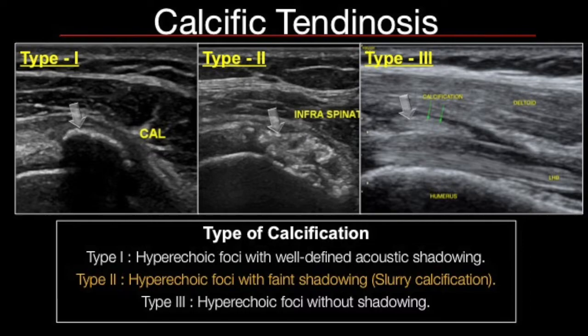You need not remember what type of calcification this is, but if you know it, it's going to help you in making certain decisions when you have to do interventions. Type 1 is typically hyperechoic foci with distal shadowing. Type 2 are hyperechoic foci with faint shadowing — this is typically slurry calcification. Type 3 are hyperechoic foci without distal shadowing.